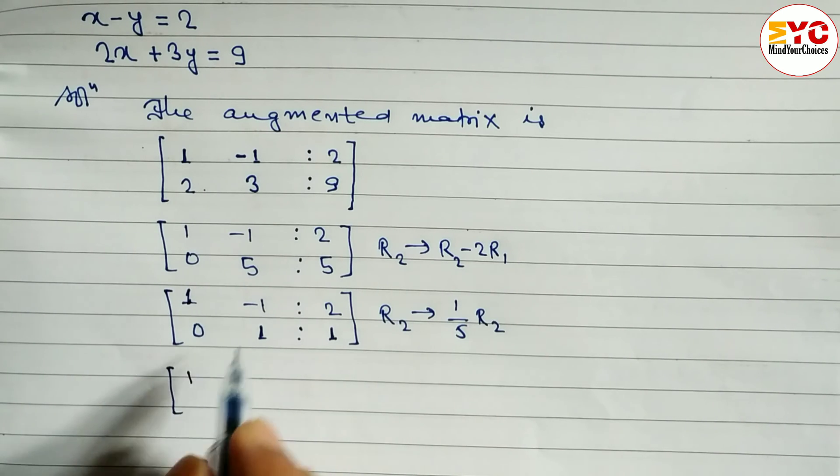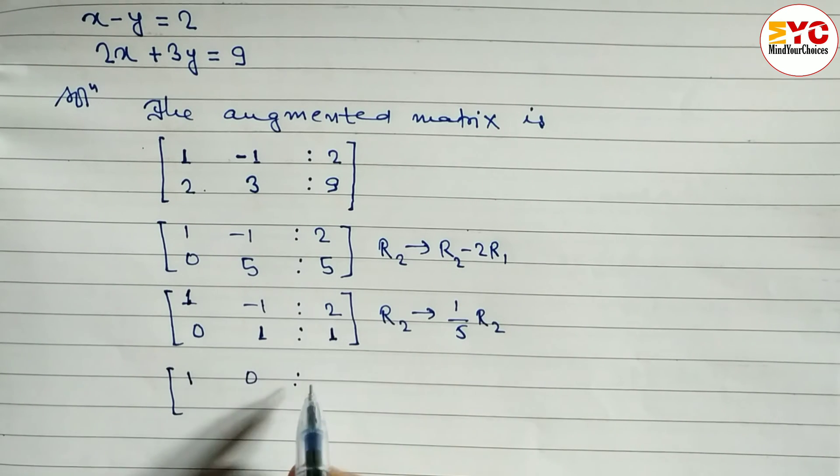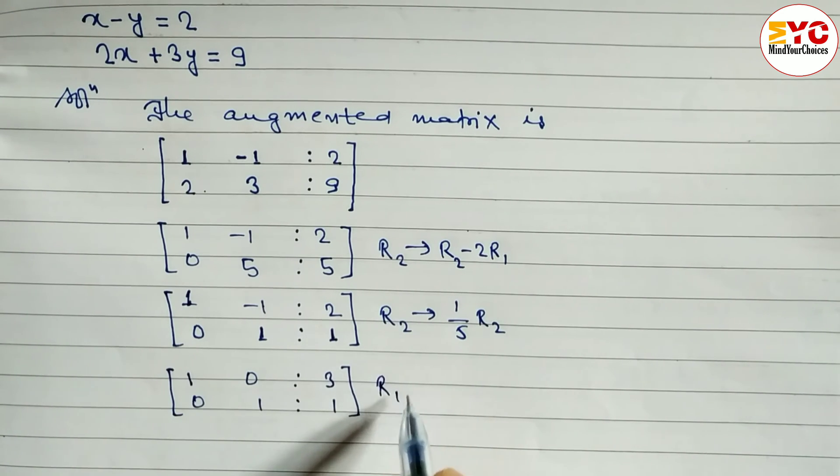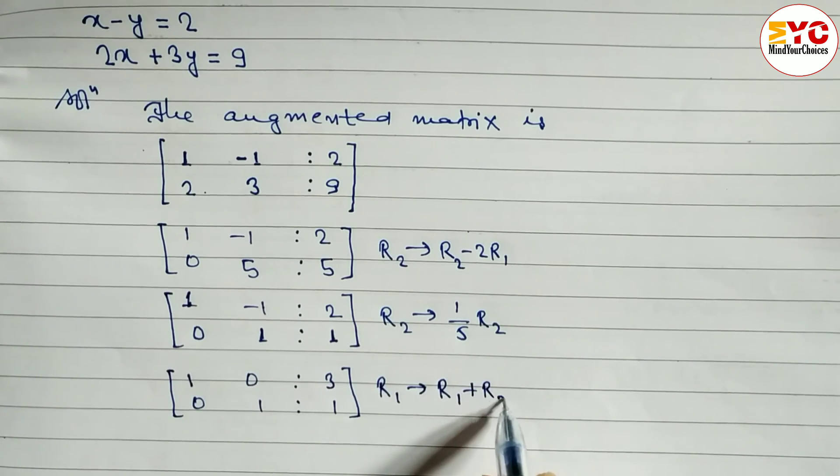1 plus 0, 1. Minus 1, 1. When you add we get here 0. When you add this two. 2 plus 1, 3. Here 0, 1. And here 1. What we done here? R1 tends to R1 plus R2.